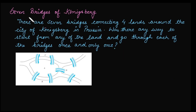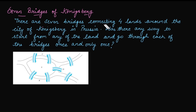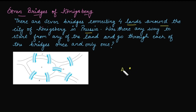There is a historical problem called the Seven Bridges of Königsberg. The problem states that there are 7 bridges connecting 4 land areas around the city of Königsberg in Prussia. Was there any way to start from any land and cross each of the bridges exactly once?